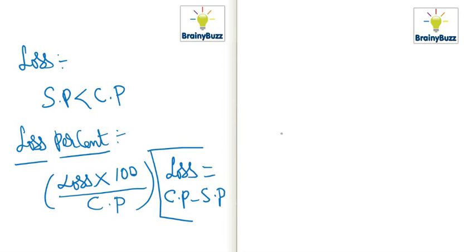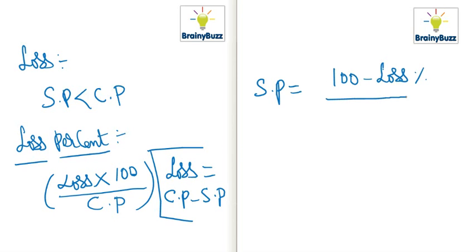Another important formula: selling price (SP) is equal to 100 minus loss percent, divided by 100, into cost price. That is: SP = ((100 − loss%) / 100) × CP.